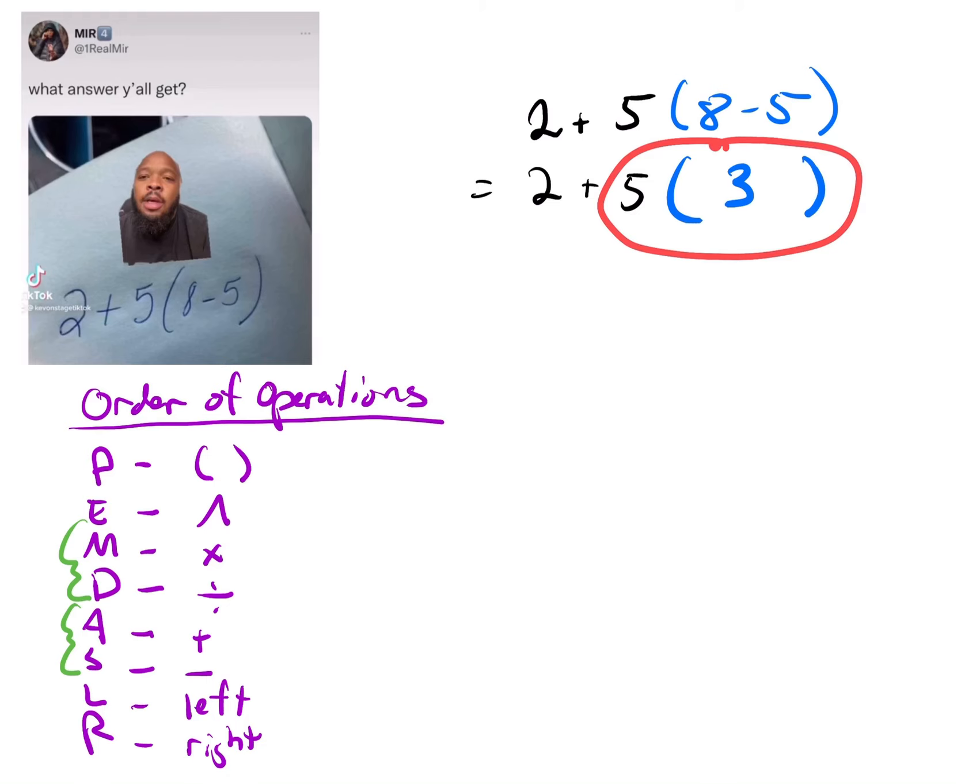We've addressed the parentheses, so then next we ask ourselves are there any exponents? There aren't any exponents, so now we're at this level of looking for multiplication and division. We do have multiplication.